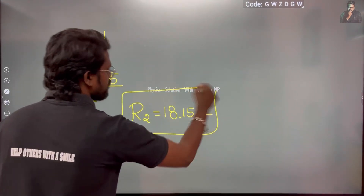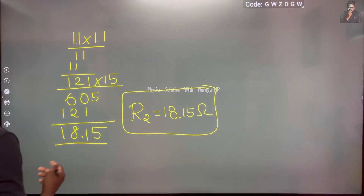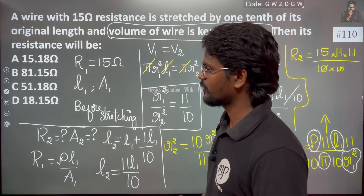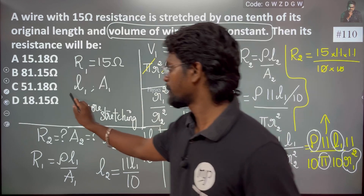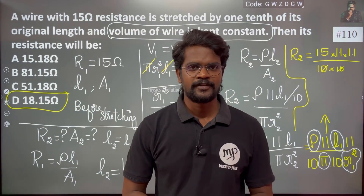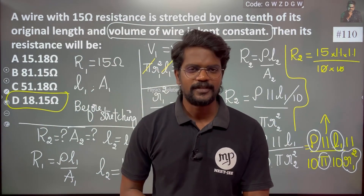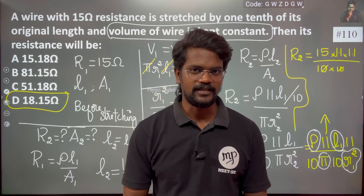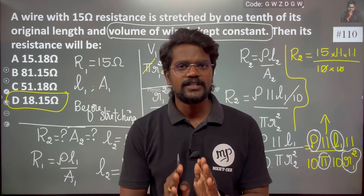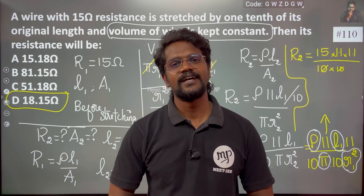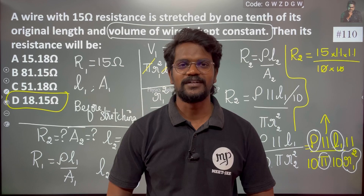So this is the new resistance after the wire is stretched: R2 = 18.15 ohms. The answer is option D. I hope this clears the confusion. Thank you, and help this with a smile.